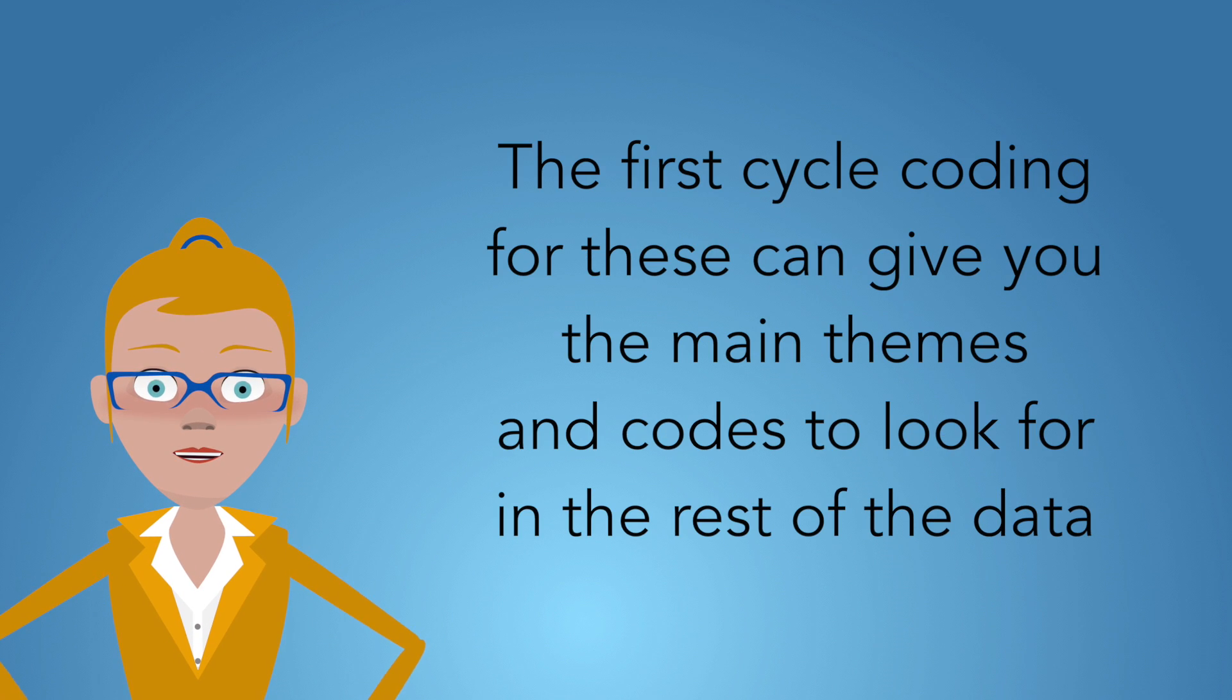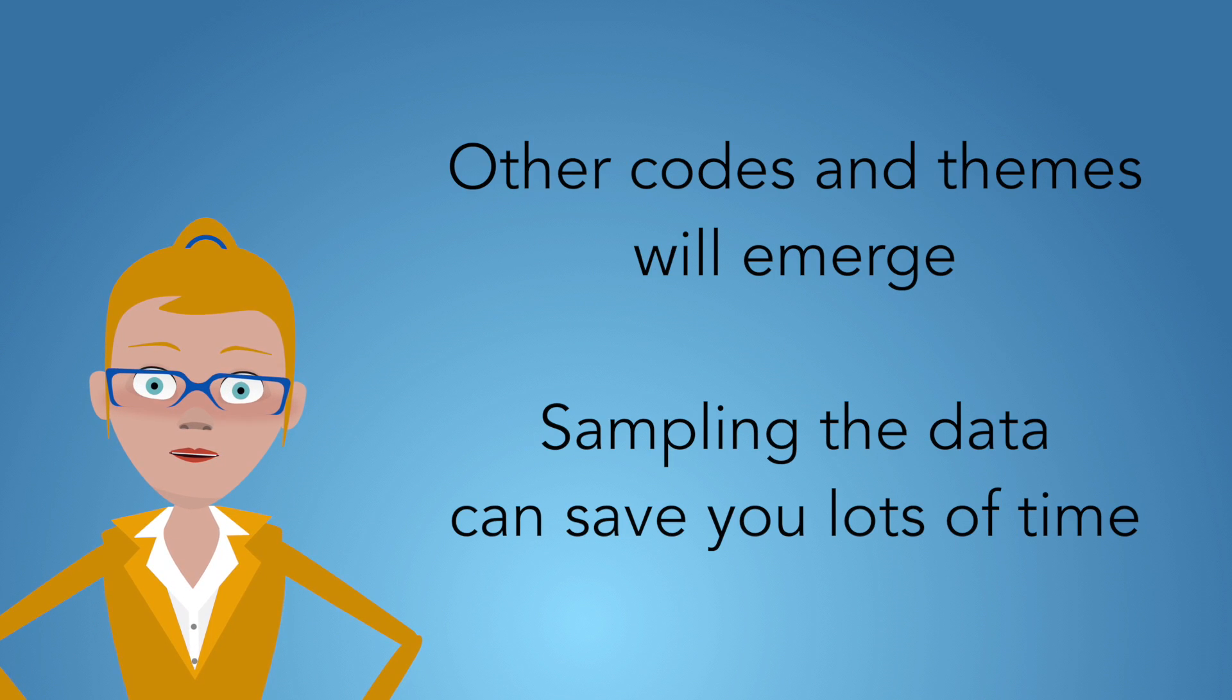And then those can give you your set codes. That gives you a pretty good idea of the main codes and themes you're going to write from. It can obviously emerge that other codes will become important as you do coding with other interviews or other visual data. But often people think they need to do first cycle coding that's very slow, in the trees process, through all of their data. And that's actually not really true.